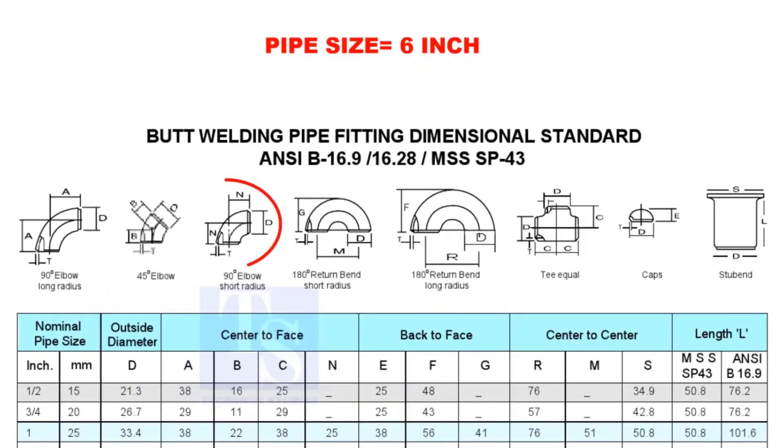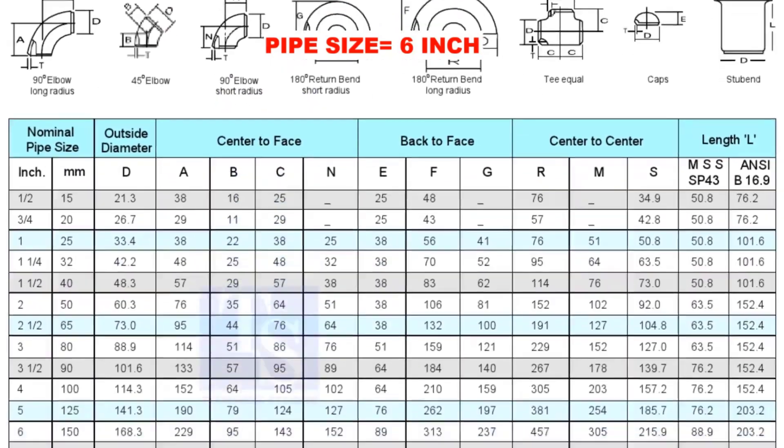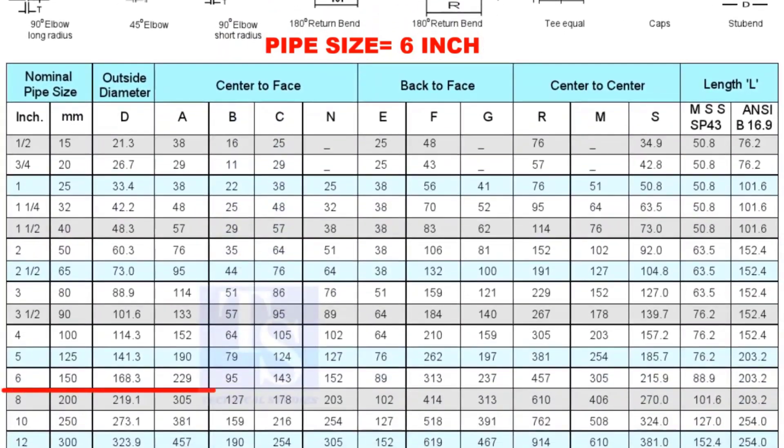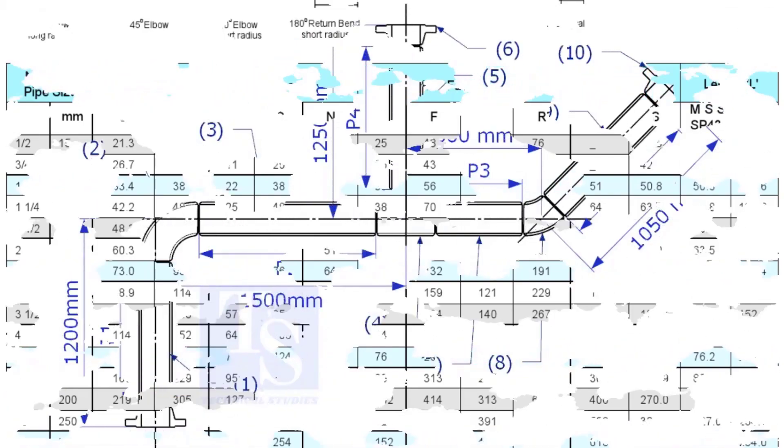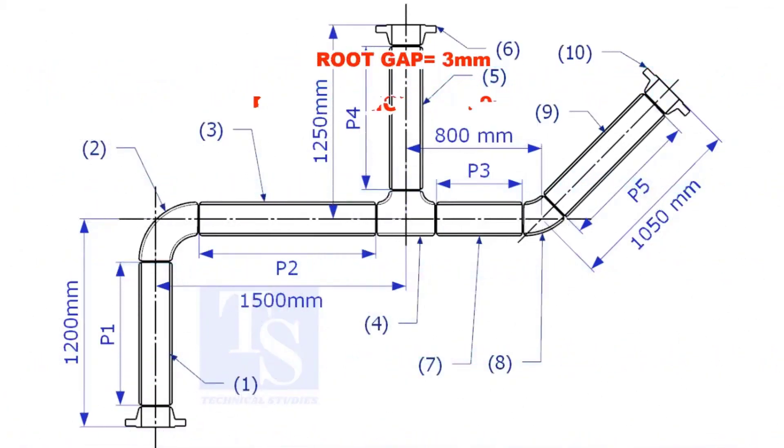Check the takeoff length of the elbow. It is 229mm. Assume the root gap is 3mm.